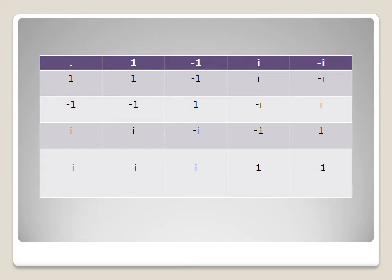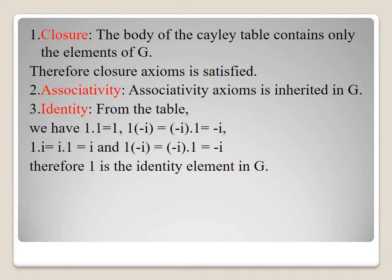Now we have to prove that all four axioms are satisfied. Closure property: the body of the Cayley table contains only elements of G, therefore the closure axiom is satisfied. Associative property: the associative axiom is inherited in G; we can verify that a·(b·c) = (a·b)·c for all a, b, c in G. Identity element: from the table, 1·1 = 1, 1·i = i·1 = i, and 1·(−i) = (−i)·1 = −i.